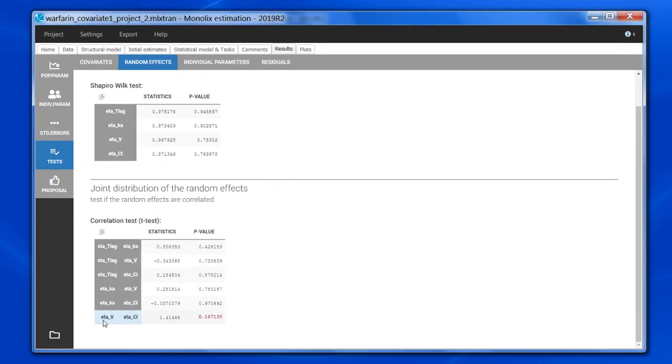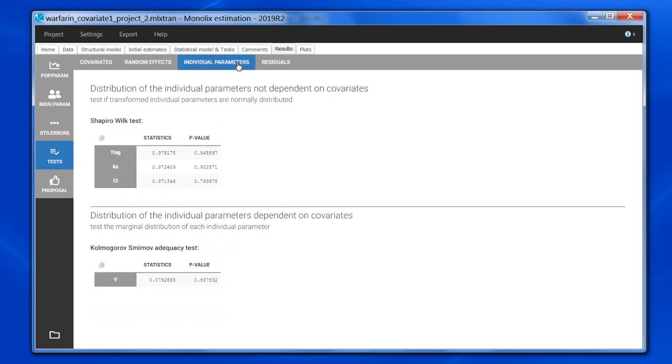Now let's check the random effects. Here, again, random effects for which a correlation is already included in the model are shown in blue. The p-value is pretty high, and it is colored in red because this contradicts the model hypothesis of a correlation between volume and clearance. In the individual parameters, parameters without covariates are still tested for normality using Shapiro-Wilk. And for parameters with covariates, we now perform a Kolmogorov-Smirnov adequacy test.